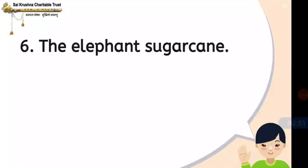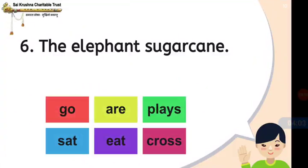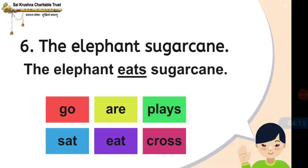The sixth question is the elephant sugar cane. What is this? Wrong children. Let us see the option. Go, are, place, sat, eat, cross. The answer is the elephant eats sugar cane. Good children.